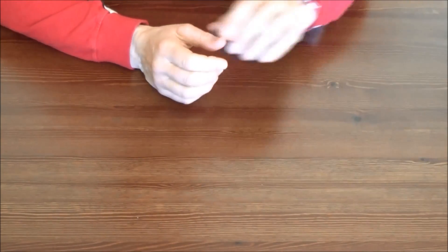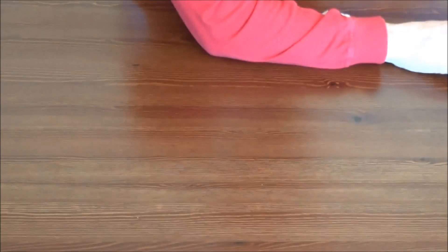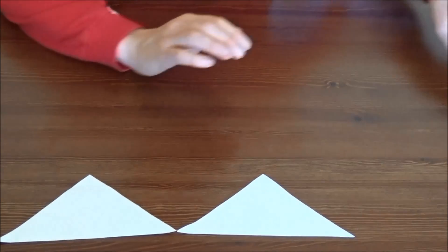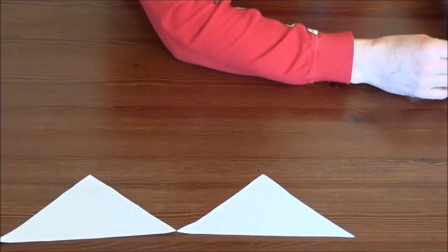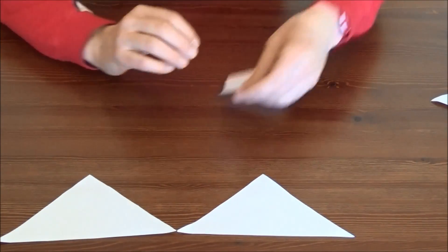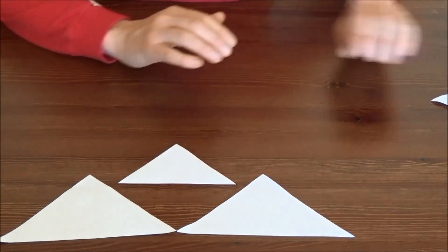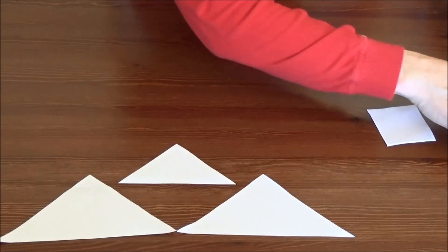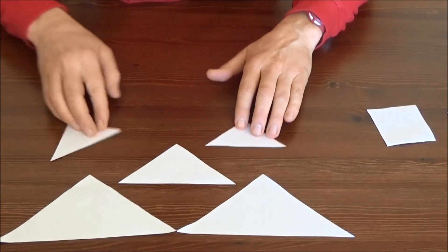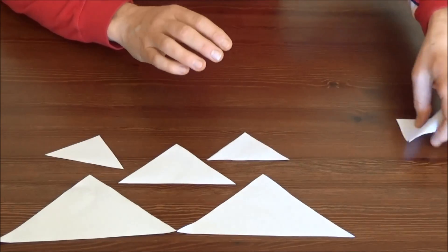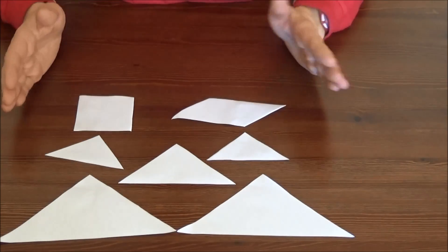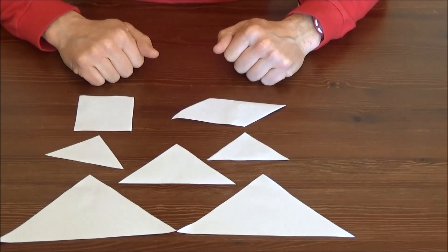Now count all the pieces. You should have seven shapes: two large triangles, a medium triangle, two small triangles, a square, and a parallelogram. And that is how you make your tangram.